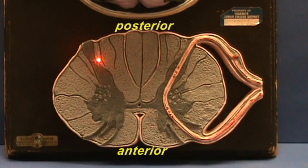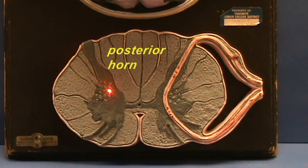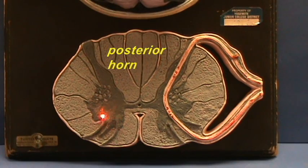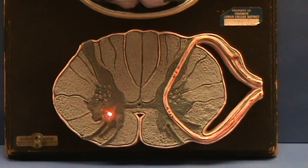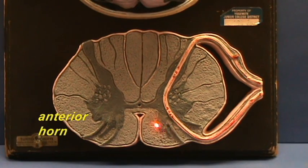This looks kind of like a horn that's extended upward. This is the posterior horn of the gray matter, and this part right over here, which is extending anteriorly or ventrally, this would be your anterior horn.